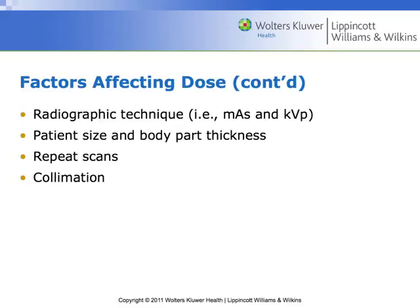As we increase the mA, we increase the dose. KVP works somewhat inversely to dose — as we increase KVP, we can actually drop the absorbed dose because the beam just goes straight through the patient. Patient size and body thickness is one of the big factors. As the patient gets bigger and bigger, image quality is going to suffer. Repeat scans also increase dose — any time we scan over an area a second time we're adding more dose, and scans that repeatedly cover the same location, like cardiac CT or brain perfusion studies, result in significantly more dose.